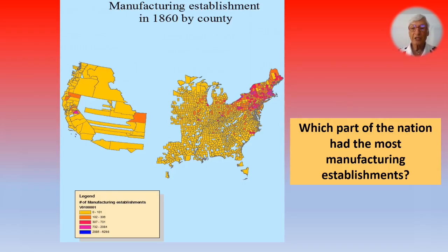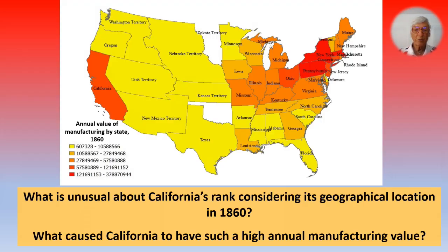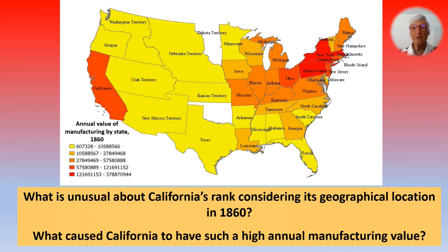What part of the nation had the most manufacturing establishments? It was New England. There were some out in St. Louis and also some in California. What's unusual about California's rank, considering its geographical location in 1860, is that so much industry was taking place there out of necessity — they couldn't always wait to import something all the way from the East Coast, so they had to develop their own manufacturing and were ingenious and invented things themselves.